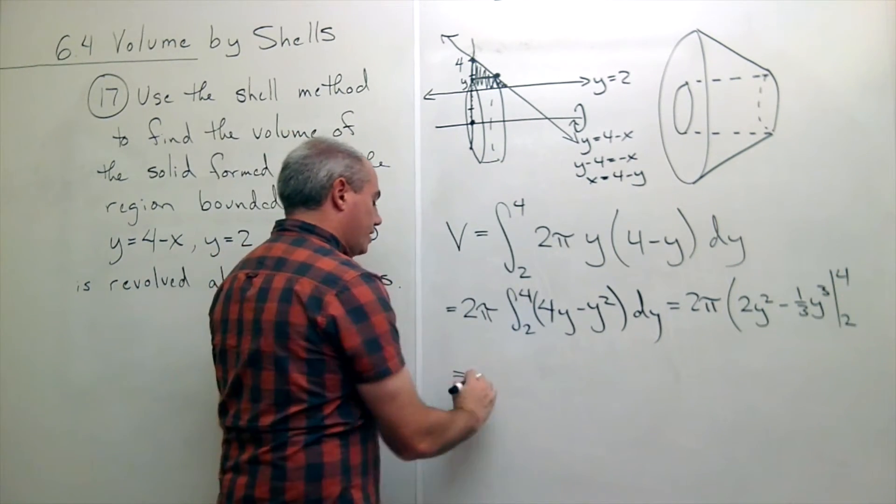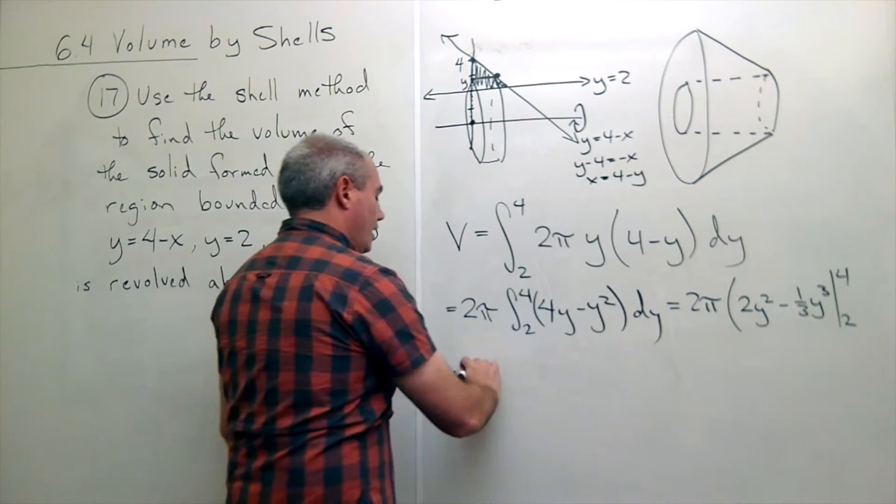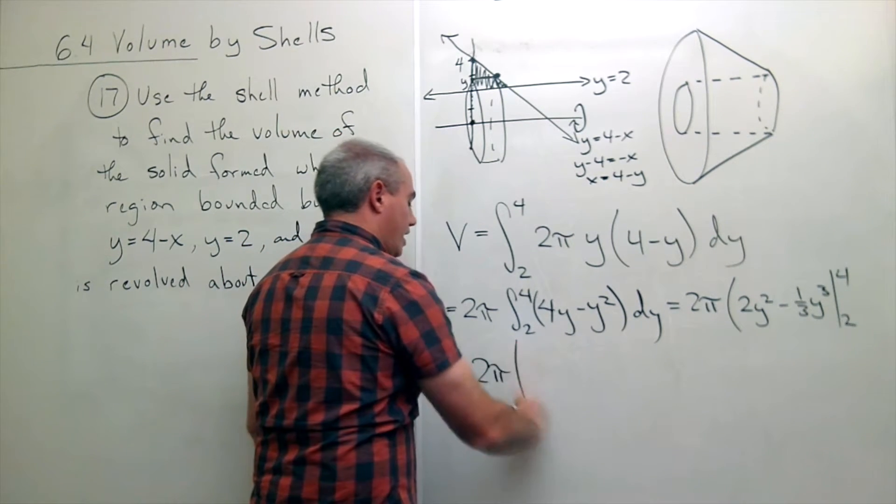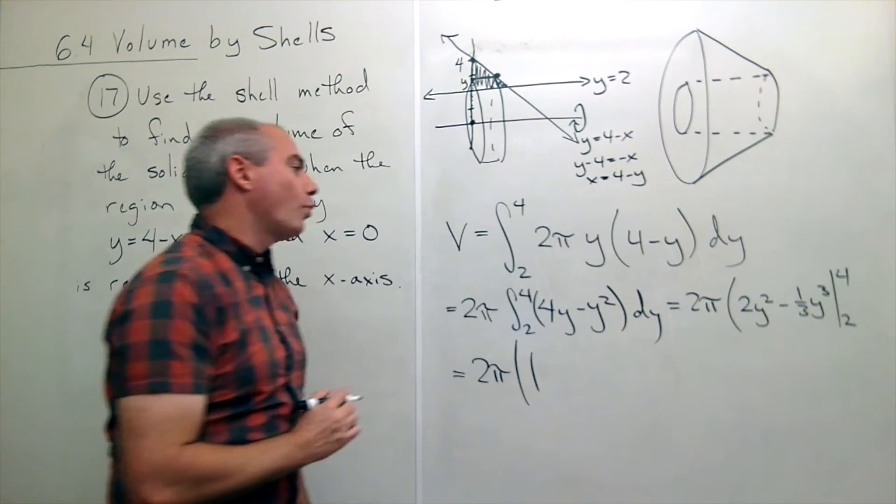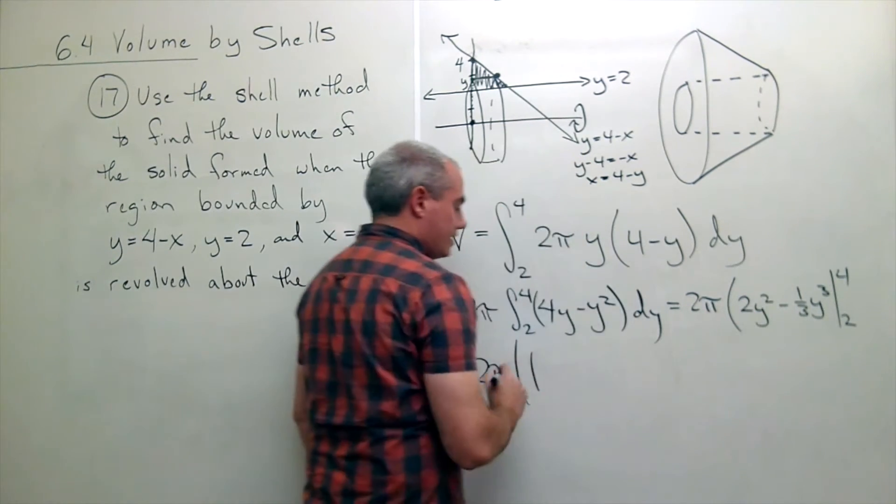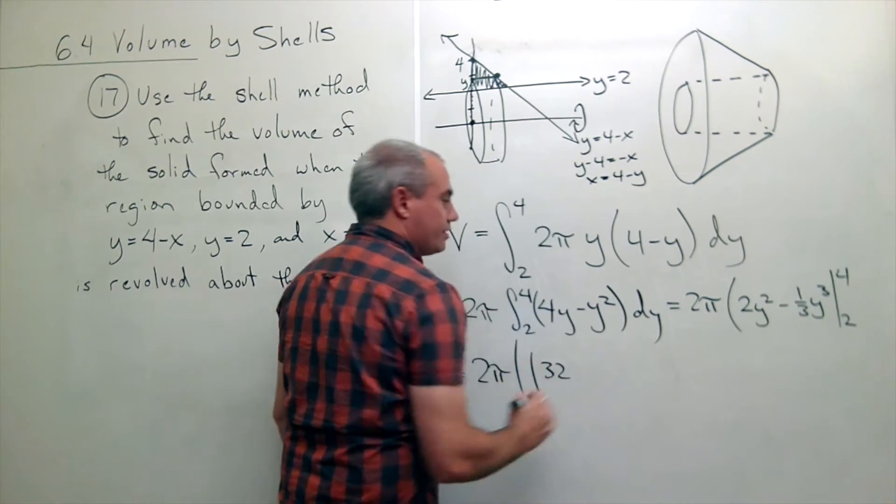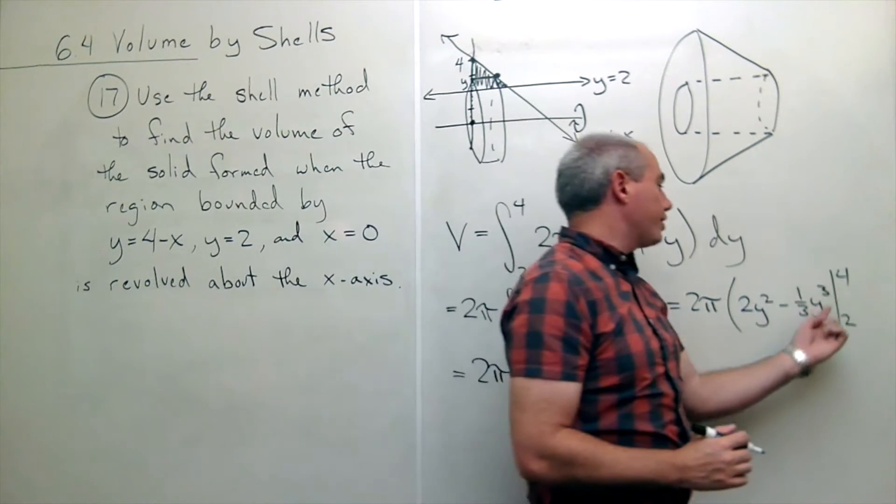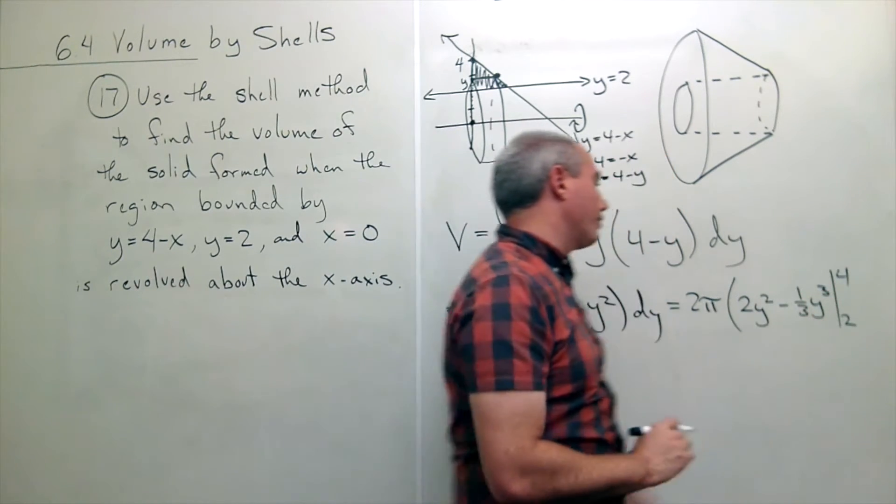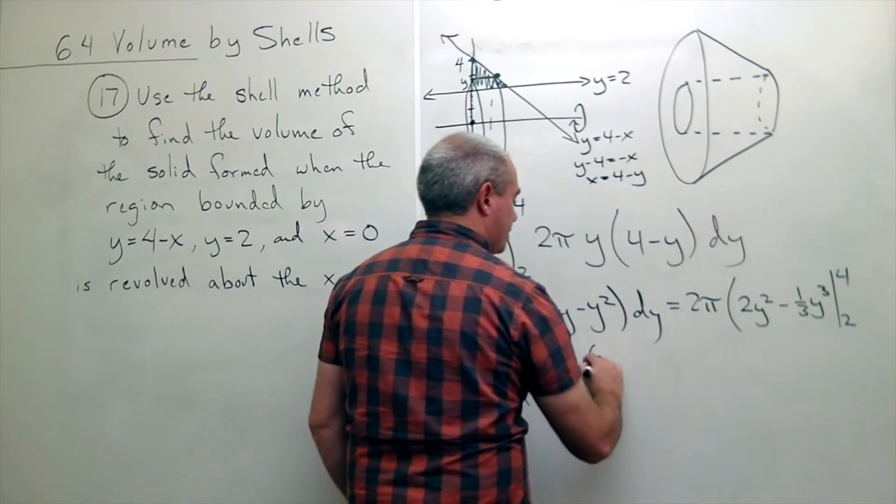Let's plug things in. We plug in the four first. I get two pi times. Now let's plug in four. I get four squared, which is sixteen times two is thirty-two. I get four cubed, which is sixty-four over three. So minus sixty-four thirds.